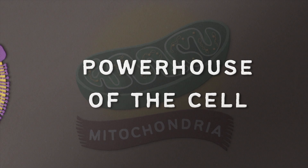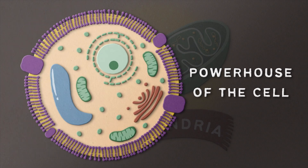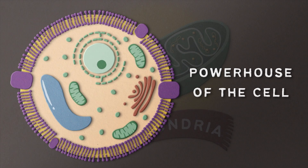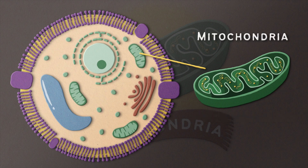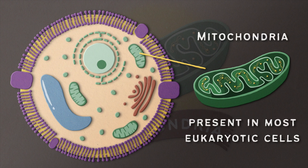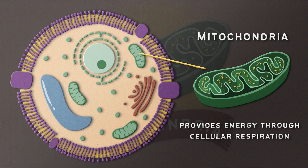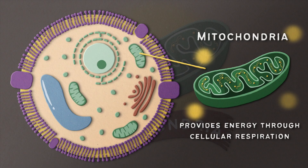Well, buckle up your seatbelts — we're getting down to the level of the cell to dissect one of the most important and oddly fascinating organelles there is. This little guy right here is a mitochondrion, an organelle that lives in your cells. Mitochondria are present in most eukaryotic cells and are important structures that provide energy to the cell through a process called cellular respiration.